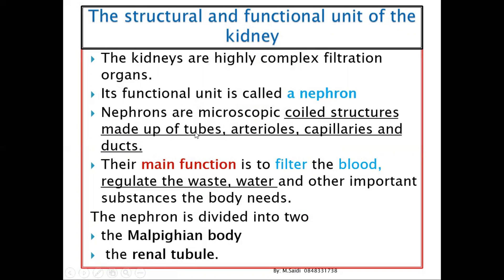The coiled structures include the glomerulus, made up of tubes. The loop of Henle has arterioles which bring and take blood. Capillaries are basically for absorption, and ducts are very important during collection. The main function is to filter blood, removing waste water and retaining important substances needed by the body, so waste products are lost through urine while the blood remains clean.